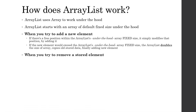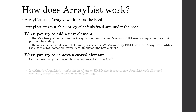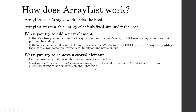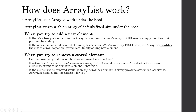Removing a stored element can be done in two ways: by index or by object key — this is an overloaded method in ArrayList. When removing by index, if the element is within the fixed-size array, a new array is created with all elements except the one to be removed. When removing by object key, the ArrayList searches the internal array until it finds the element, then removes it using its index.